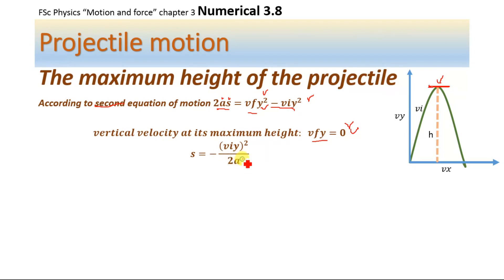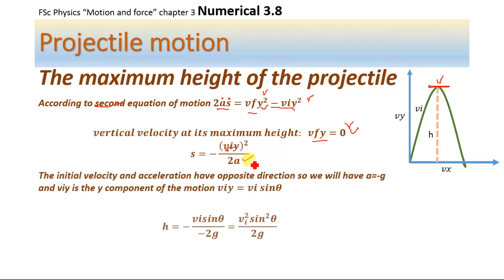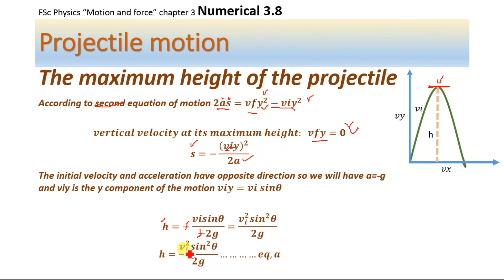The VF, final velocity in the vertical direction, is equal to 0. Substituting and solving for displacement S, we get S = −VI² / 2A. We take acceleration A = −g in projectile motion. Substituting A = −g and the y-component VI sinθ, the displacement S becomes the height H = −(VI sinθ)² / (−2g). The minus signs cancel, giving H = VI² sin²θ / 2g. Using this equation, we will determine the maximum height of the projectile.